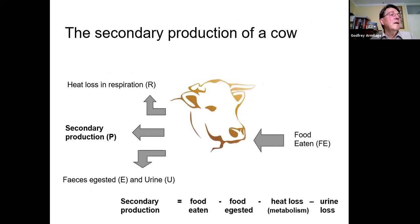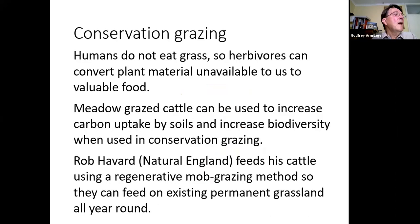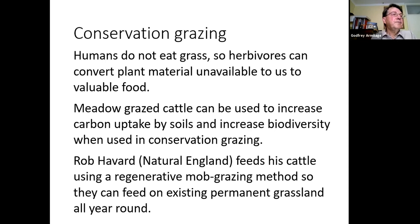If we look at a cow, 90 percent of the vegetable matter eaten by the herbivore is unavailable to us, and if you take into account bones, offal, and skin, an even smaller percent is available as meat. This is part of the argument for cutting down on meat eating — there is less energy available, and perhaps if we ate more plant material there'd be more available for everyone. However, we do not eat grass ourselves, so herbivores can convert plant material unavailable to us into valuable food. Also, meadow-grazed animals can be used to increase carbon uptake by soils and increase biodiversity when used in conservation grazing. Rob Hayward provides an excellent example of this in his regenerative mob grazing.